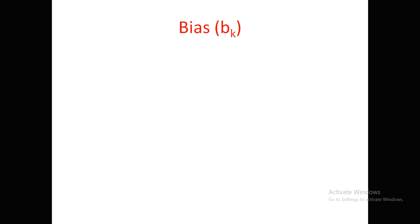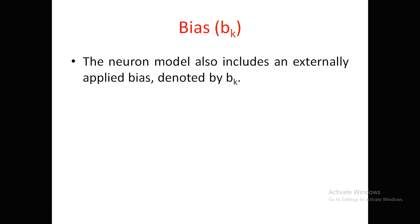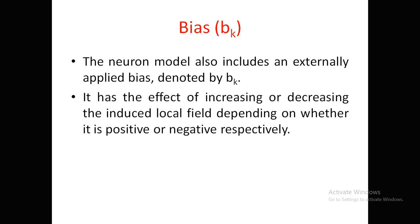The bias bk is externally applied to the neuron. Its main purpose is to increase or decrease the induced local field — that is, the net input. If the bias is positive, the induced local field increases; if negative, it decreases.